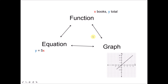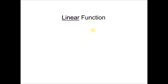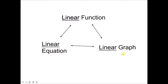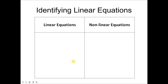Now, there are different types of function. Previously, you learned the type linear function. Hence, a linear function can be represented in the form of a linear equation. And if we try to plot the linear equation, we will have a linear graph. So what is the meaning of linear here? It is easier to understand if I start by using linear equations. So we go into linear equations and try to identify what they are.